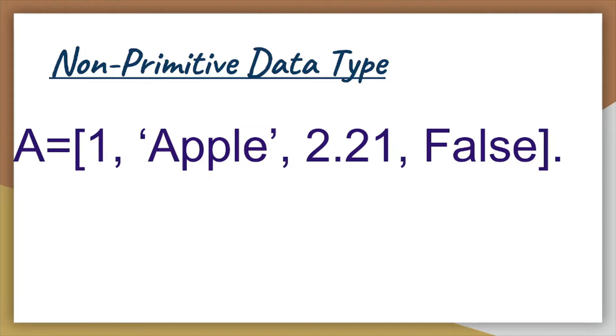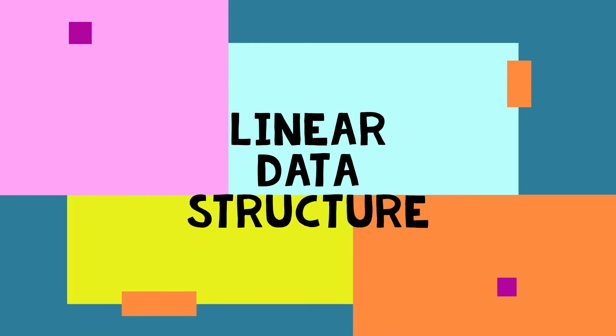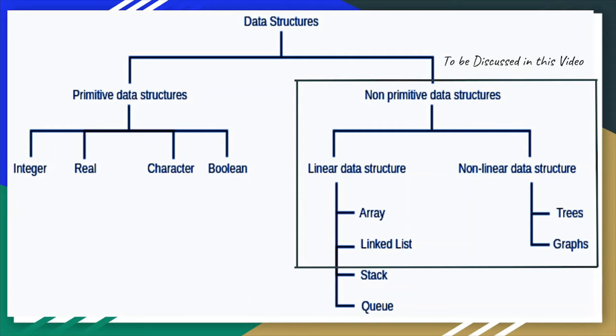Now non-primitive data types are further divided into linear and non-linear data types. So let us look at them one by one. Linear data type follows arrangement of element in a sequential manner. Each element in linear data type is linked to its previous and next element. Since the elements are arranged linearly, it becomes easy to access the element in a single run.